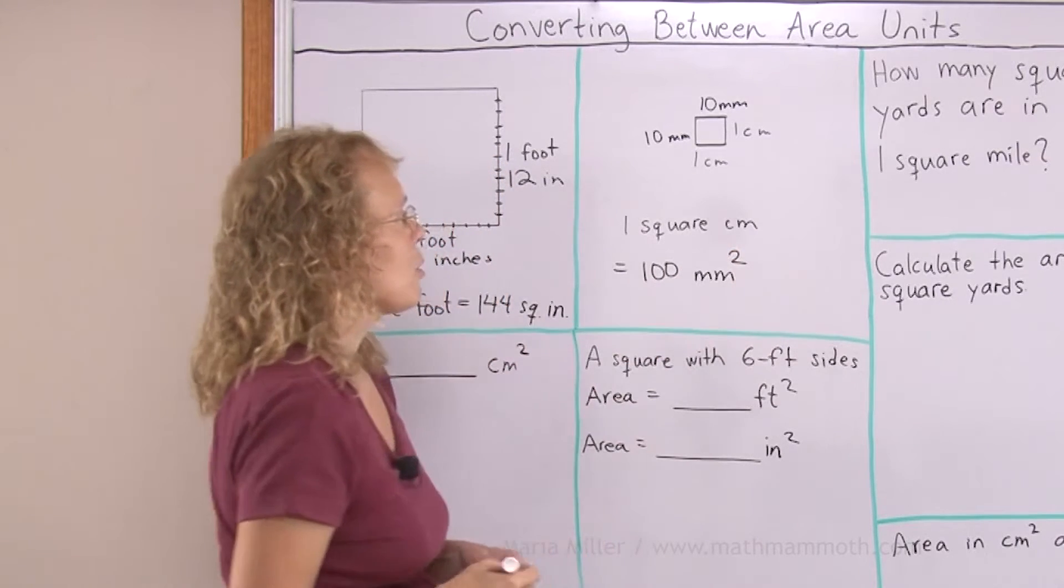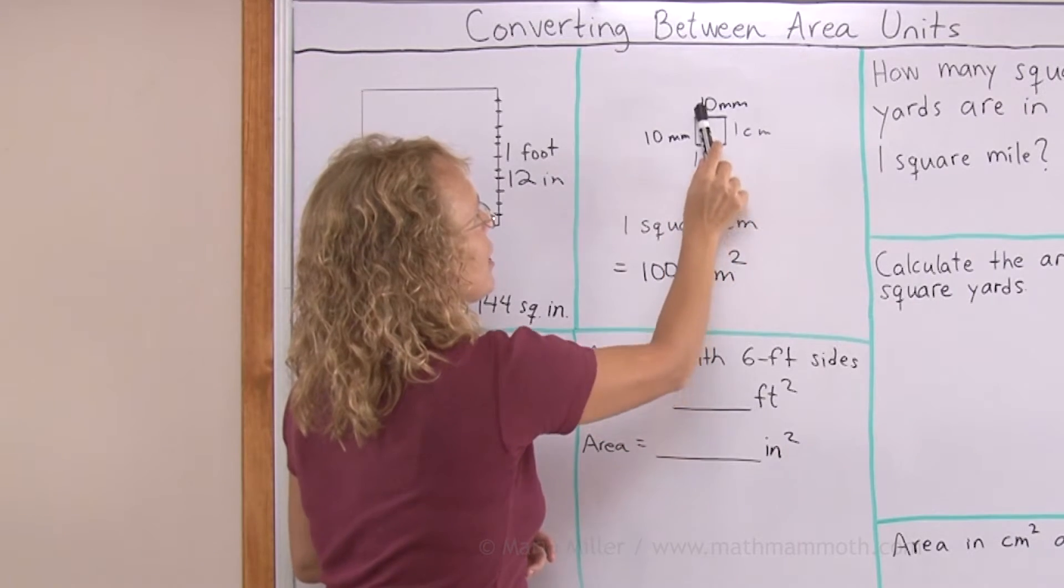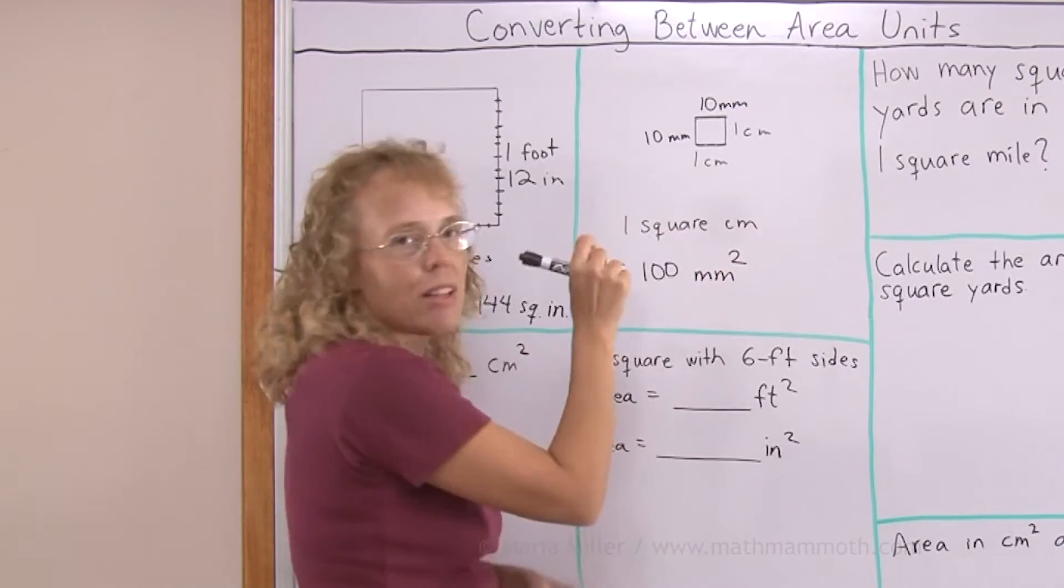So one square centimeter is 100 square millimeters. You can imagine, divide it into 10 this way, divide it into 10 this way, and you will have 100 little squares.